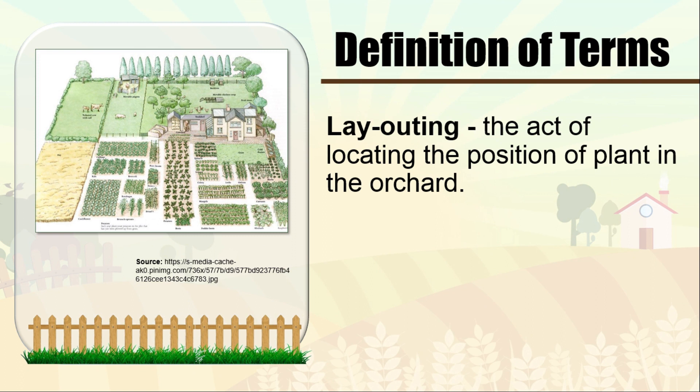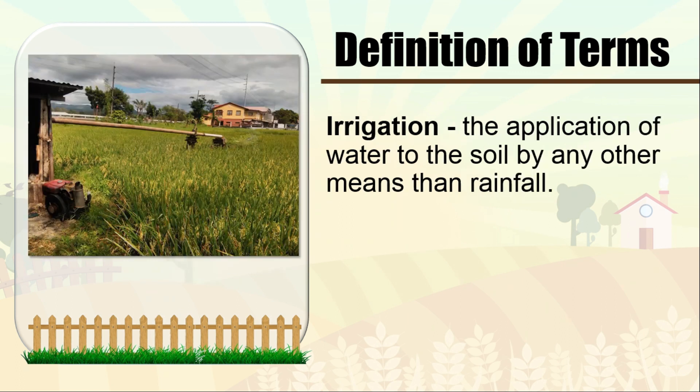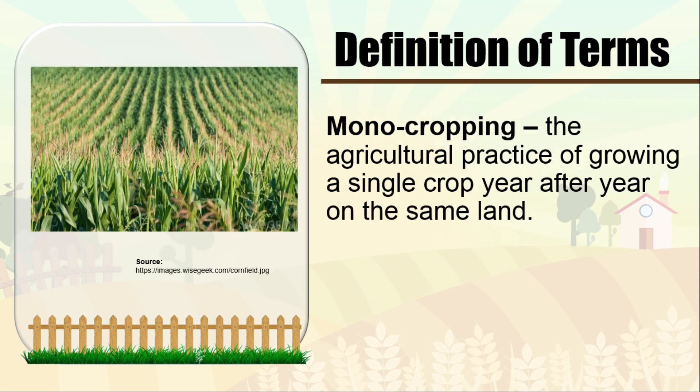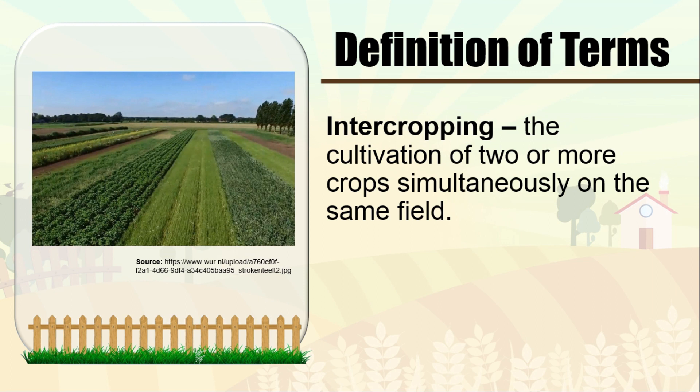Before we proceed, let's define these terms. Layout: the act of locating the position of a plant in the orchard. Irrigation: the application of water to the soil by any other means than rainfall. Monocropping: the agricultural practice of growing a single crop year after year on the same land. And intercropping: the cultivation of two or more crops simultaneously on the same field.